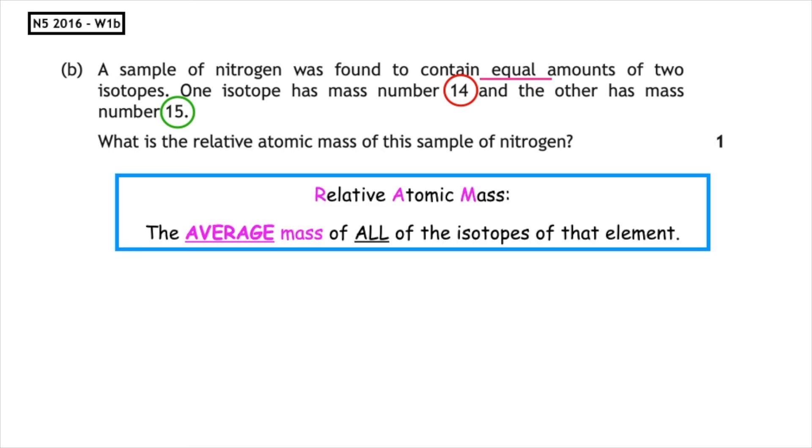Remember that the relative atomic mass is the average mass of all of the isotopes of that element. So because we have equal numbers, we need to add 14 plus 15 and divide it by 2 to work out our average. So the relative atomic mass is 14.5.